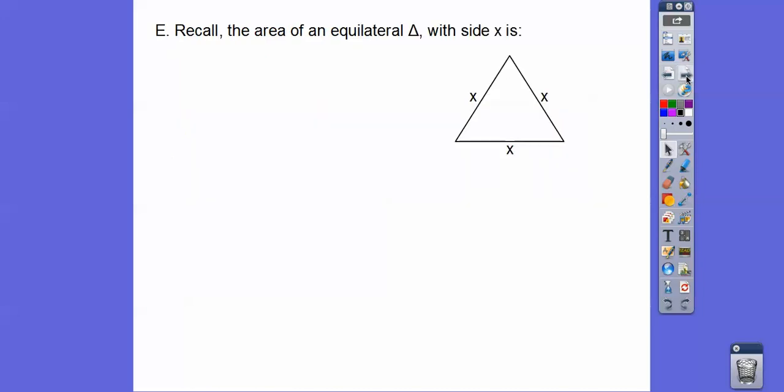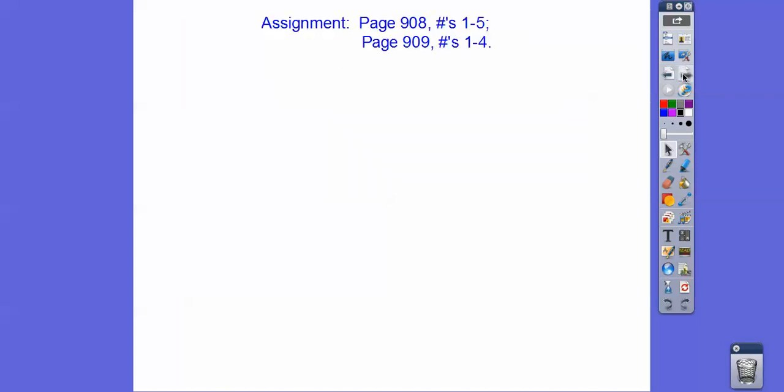All right, and then the last little piece, you're going to be asked to do this. Recall the area of an equilateral triangle. We discovered this in the first lesson. I think it was number 4 or 5 in our exercises. So if you have an equilateral triangle, the area is just the side squared root 3 over 4. If you are in my class, I'm going to give you that assignment. Take care.